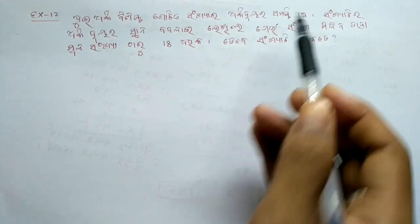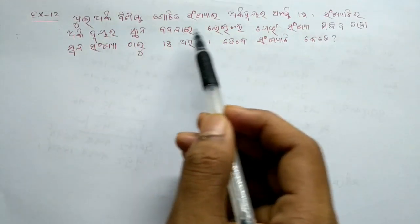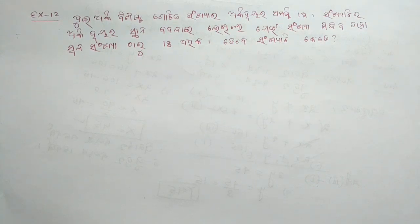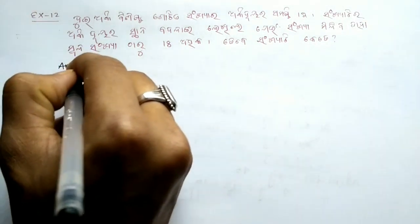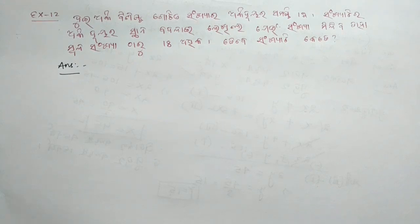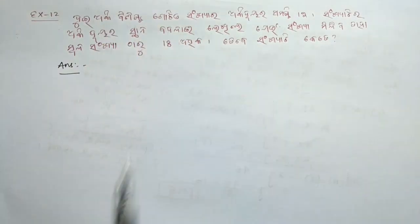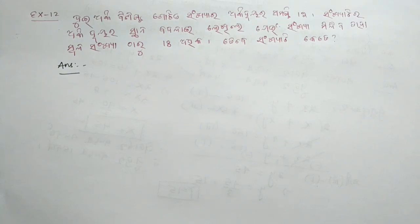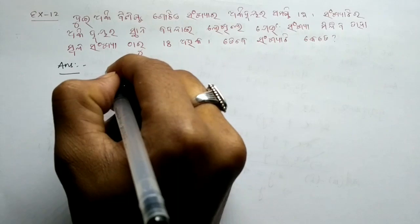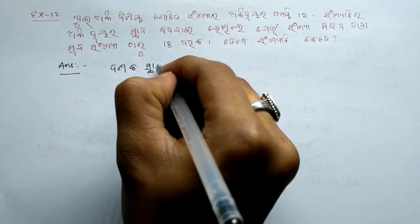Now for Example 12: A two-digit number — the sum of its digits is 12. If we interchange the digits and write the new number, the new number obtained by reversing the digits is 18 more than the original number. Let's set up variables and form equations.